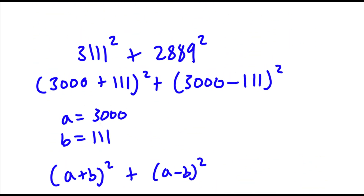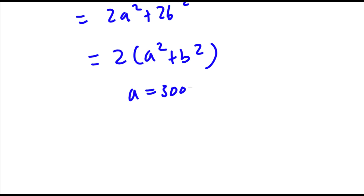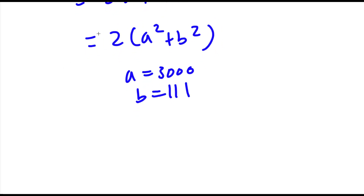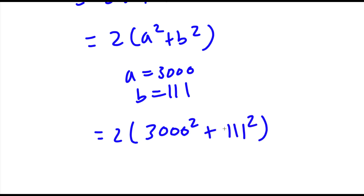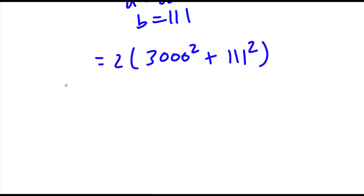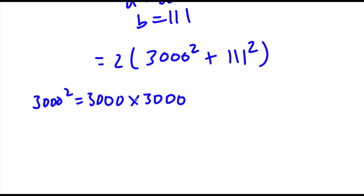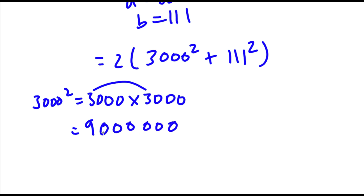Now remember we set a equal to 3,000 and b equal to 111. Substituting back in, I get 2 times (3,000 squared plus 111 squared). Now 3,000 squared is the same as 3,000 times 3,000. We can ignore the zeros and do 3 times 3, which gives us 9, then add all 6 zeros. So our answer here is 9,000,000.